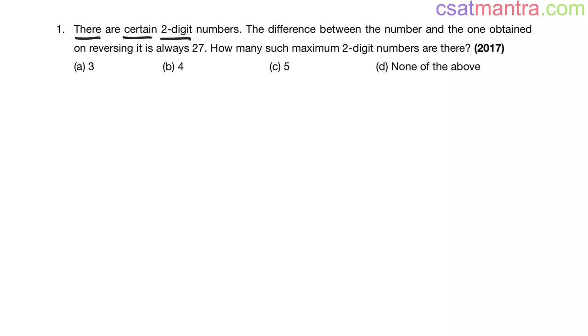There are certain two-digit numbers. The difference between the number and the one obtained on reversing it is always 27. How many such maximum two-digit numbers are there? This question was asked in 2017.